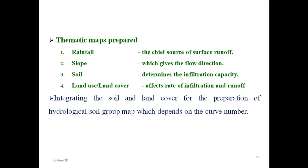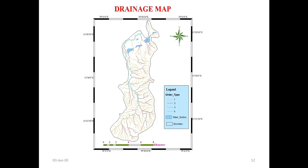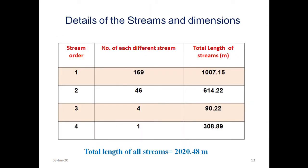The thematic maps which are considered here are rainfall, slope, soil, land use and land cover which majorly affects the surface runoff. Integrating all these things we will get the hydrological soil group map which depends on some curve number which we have identified. This is the drainage map. This is the statistics of the streams and dimensions.